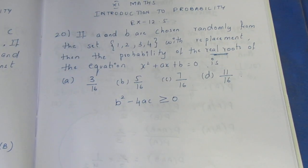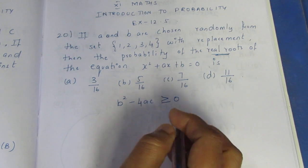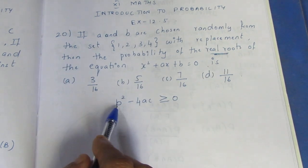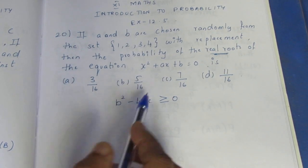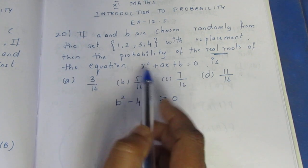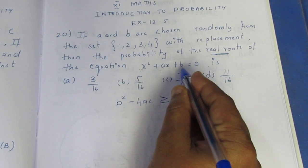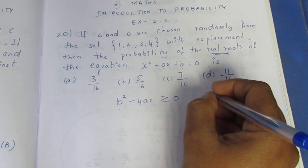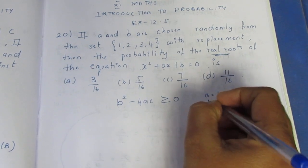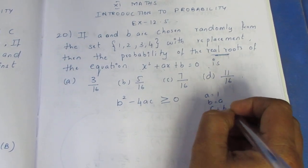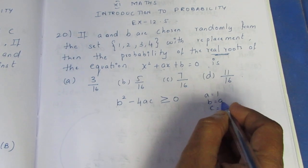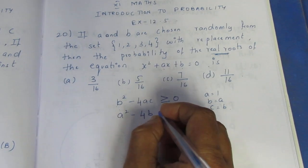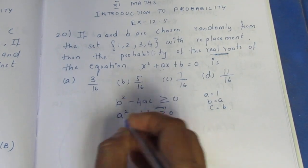So this is the probability we need to find. A and B are chosen randomly. We substitute into b squared minus 4ac. Here c equals a, so if b squared is equal to 4ac, we check when this condition holds for each pair.